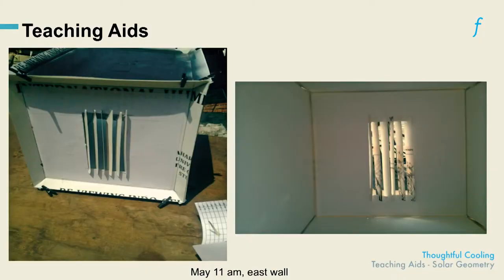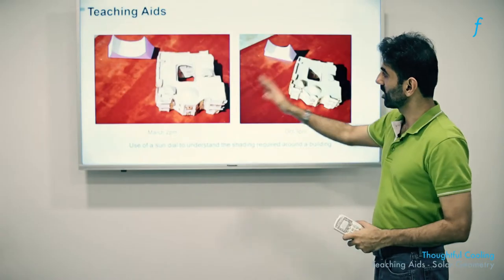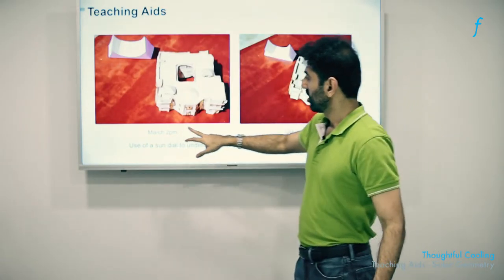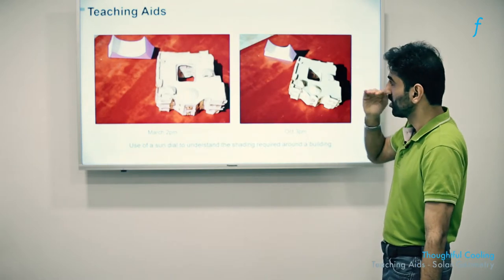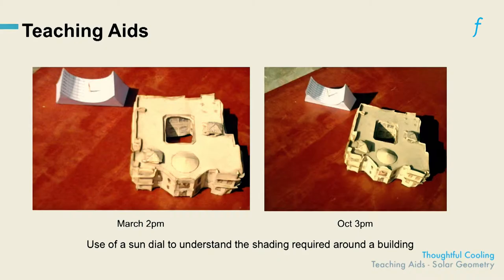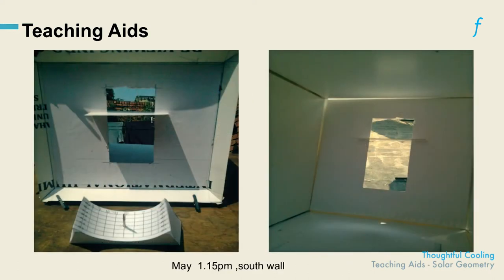This is another extension of that same idea. This is a sundial, and here I am on the same afternoon trying to mimic March 1st at 2 p.m. and October at 3 p.m. Is the building able to shade itself? Where are most of my shading problems? As you can see, in October I don't have a shading problem here, but in March I will definitely have a shading problem, so I need perhaps some short shading devices inside to shield this building from the sun. This is May 1st, 1:15, south wall. These are just extensions of the same idea using the sundial to predict the shading performance of the building.